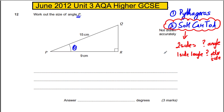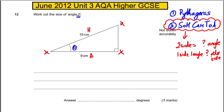Let's label up our triangle — I don't care about it being called P, Q, R. This is our angle here. This side opposite the angle is the opposite. This here is the adjacent, and this here is the hypotenuse.